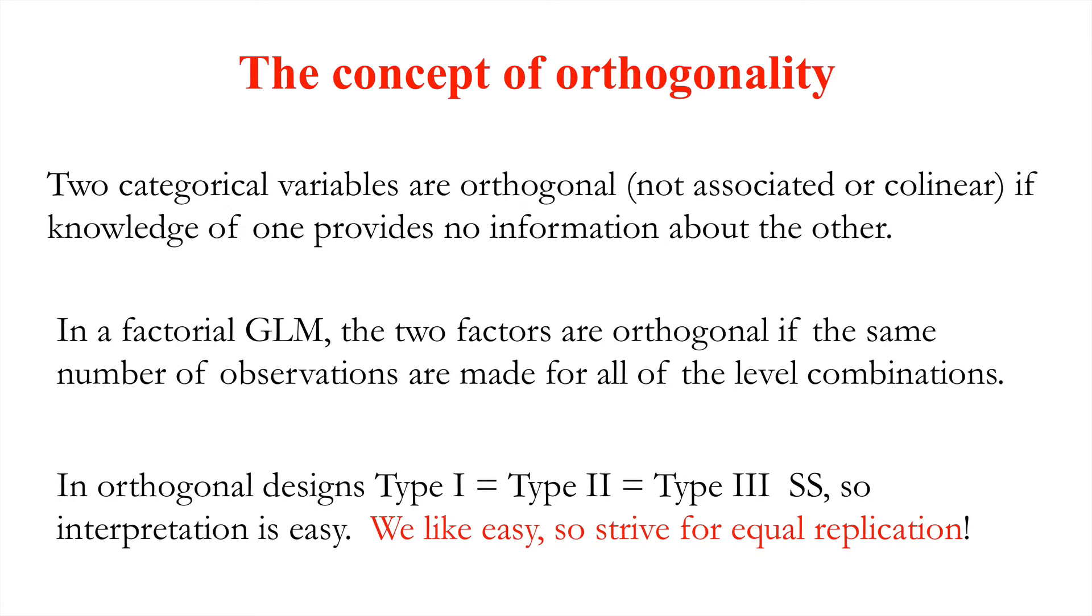In those orthogonal designs, type 1, type 2 and type 3, and we've met two of those, the first and the last, sums of squares, are all equal. And so interpretation is easy. And that is because our predictive variables are not collinear with one another. They're not changing as we change the other. And it makes our interpretation that much easier and that we don't need to think about an alternative interpretation based on an alternative partitioning of the sums of squares. We like easy. And so it's important, where possible, to strive for equal replication in these factorial designs.